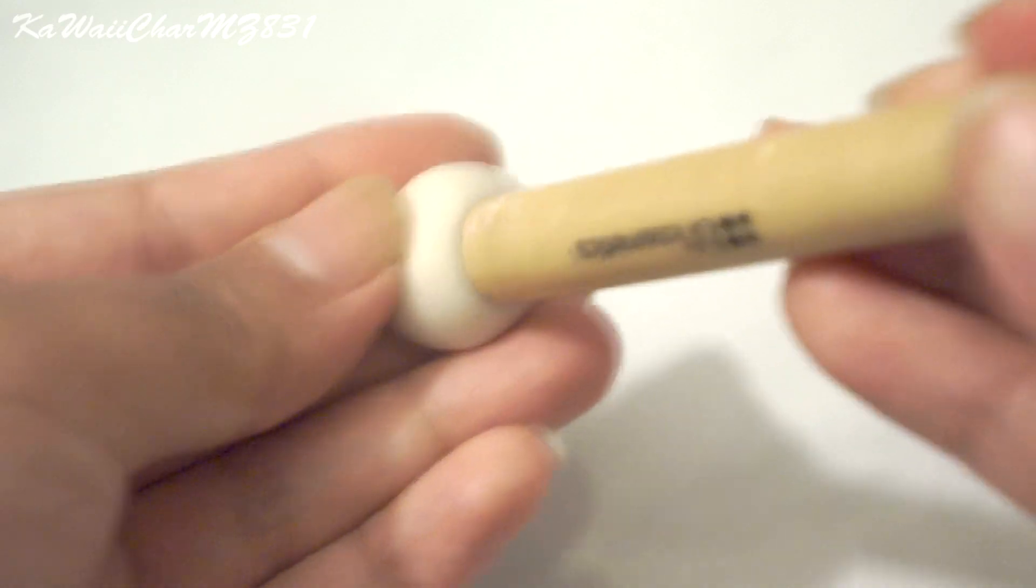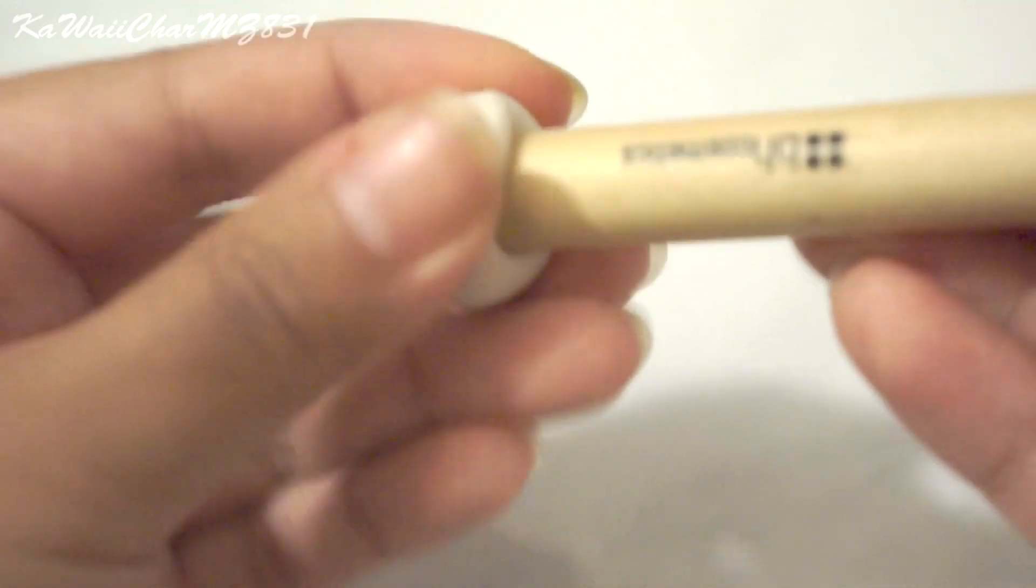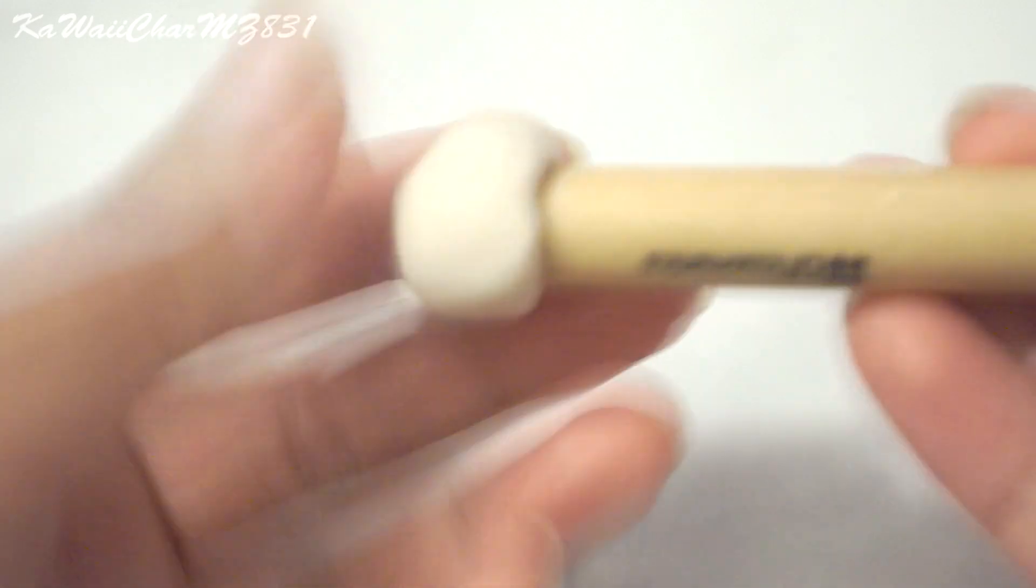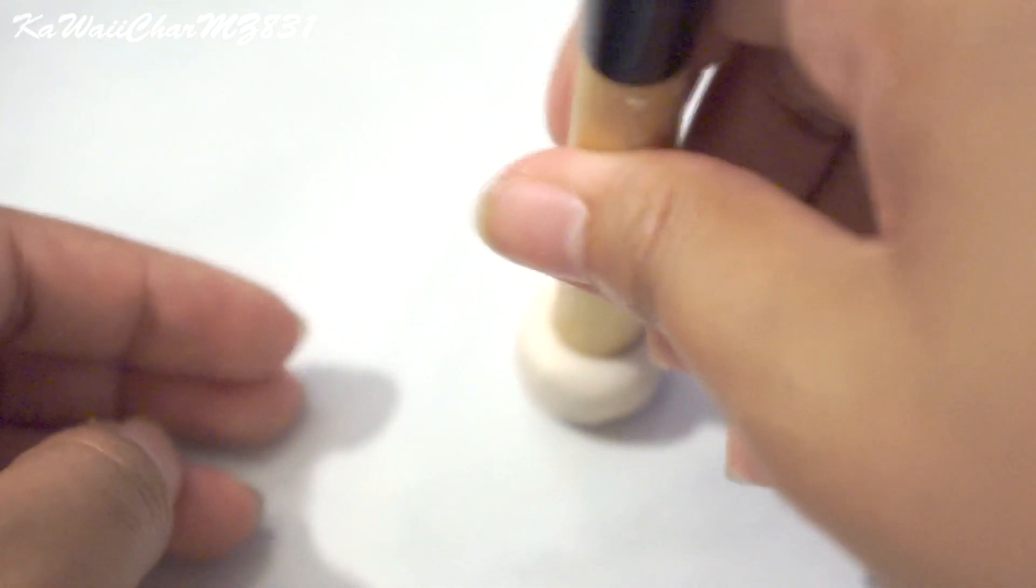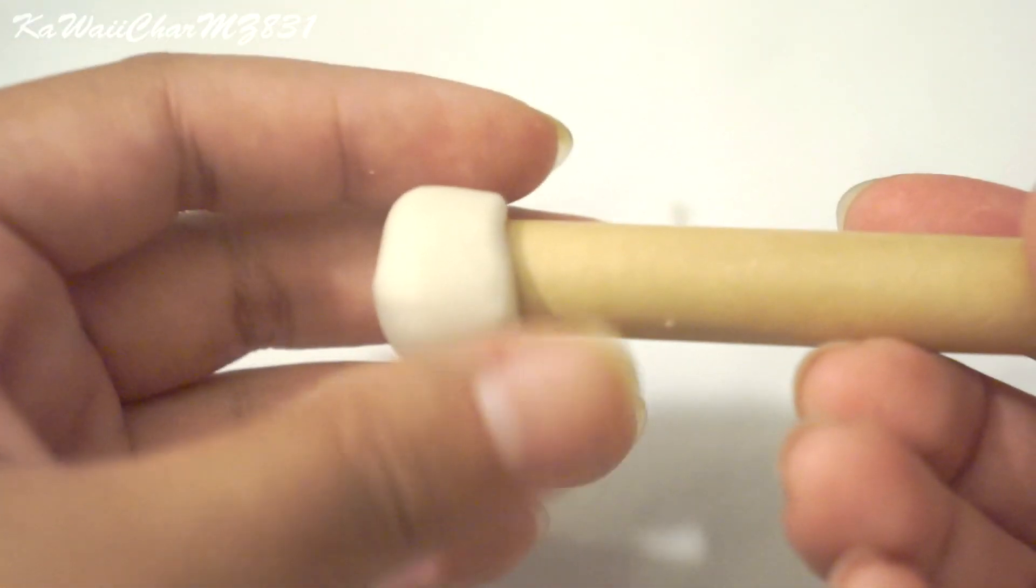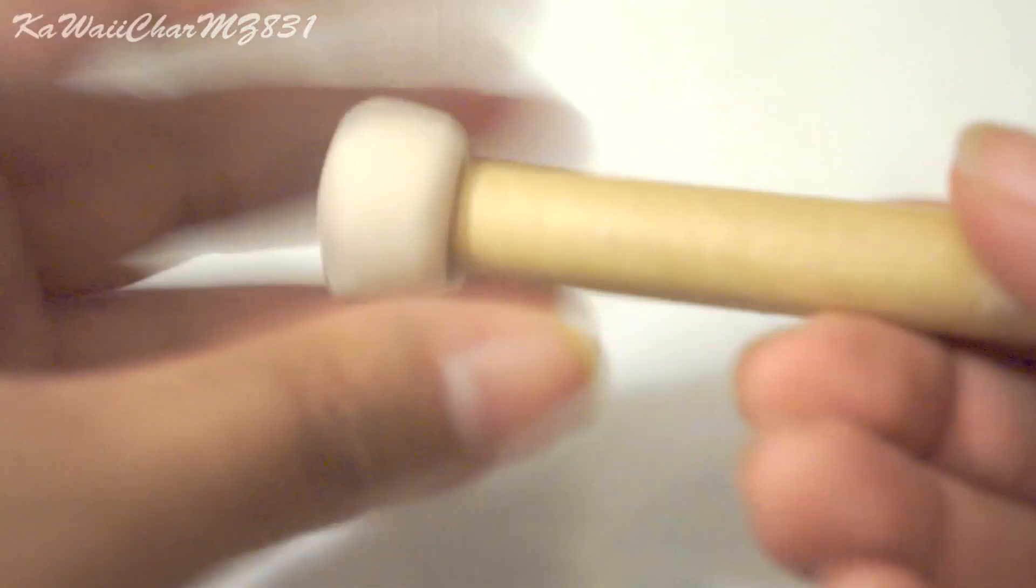The second way is to use the back of a makeup brush or a marker of your choice, anything that's thick in size, and just wrap some of your mold maker around it. It's up to you how high you want the mold to be. Make sure that you flatten the bottom, and then you go ahead and pull it off.